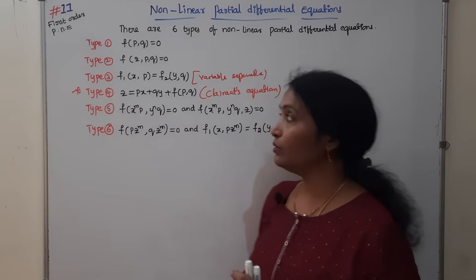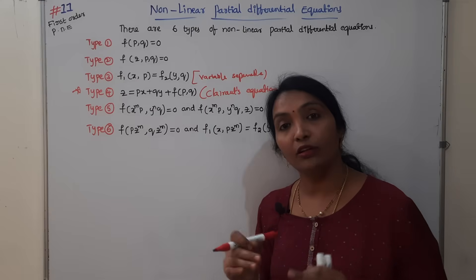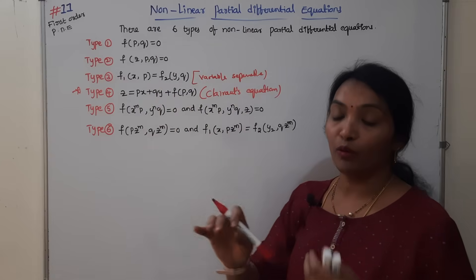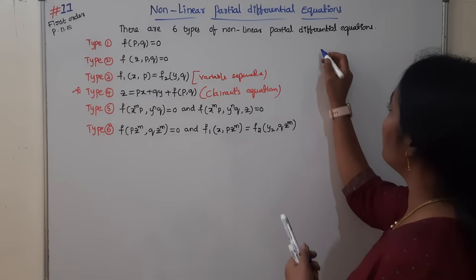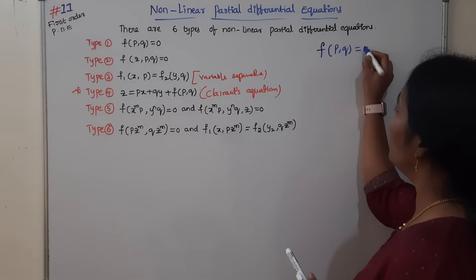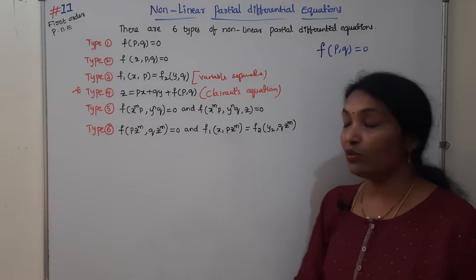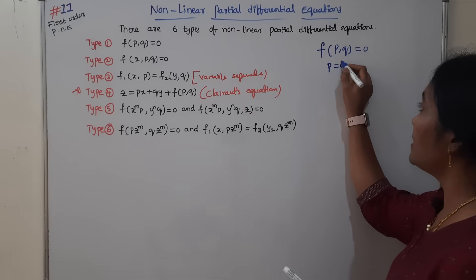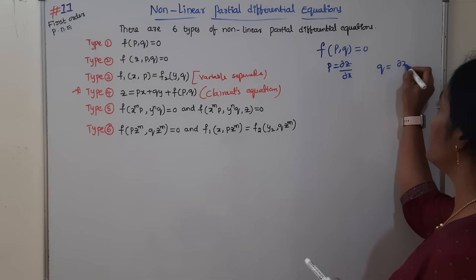In terms of p and q, we have some procedures. The given function should be in terms of p and q only — the same equation with only p and q. From our partial differentiation, p is nothing but ∂z/∂x and q is nothing but ∂z/∂y.